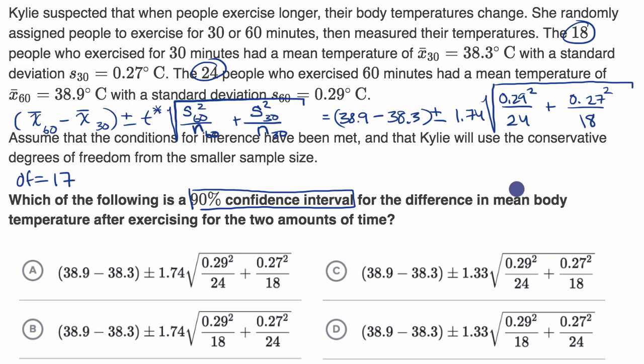And we're done, and we can look down at the choices. Let's see, they all got the first part the same, because that's maybe the most straightforward part, 38.9 minus 38.3, plus or minus 1.74, so both of these are looking good. We can rule out these two, because they have a different critical t value.